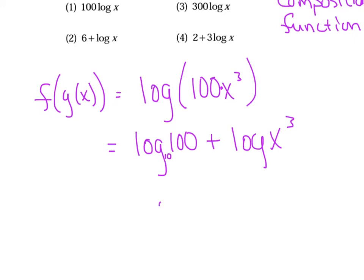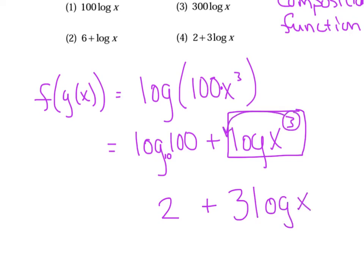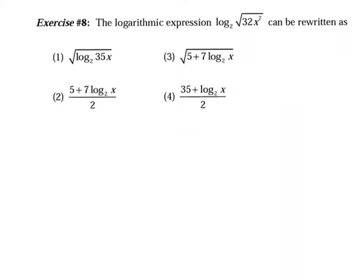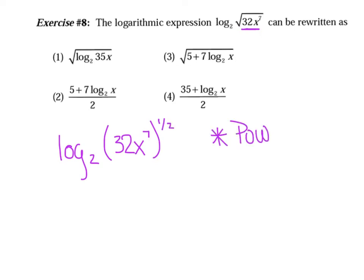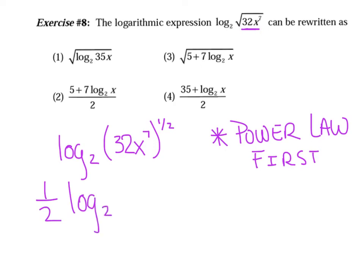Example number eight — we're throwing you a monster curveball because both the 32 and x to the seventh are within the radical sign. First move: instantly rewrite it so the entire quantity 32x to the seventh is raised to the one-half power. We have to use the power law first — this is not optional. So I rewrite it as one half times log base 2 of 32x to the seventh. We are not allowed to distribute that one half through; it has to stay out in front. Now, we can use the product law second.